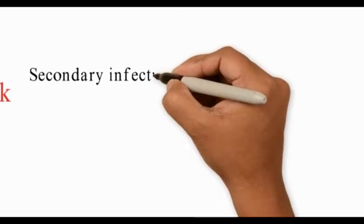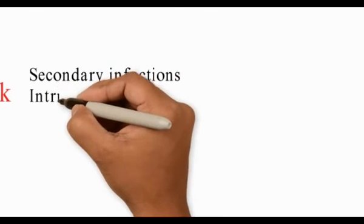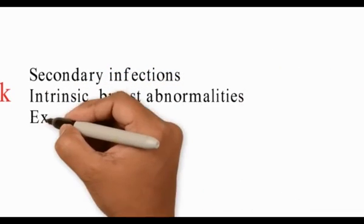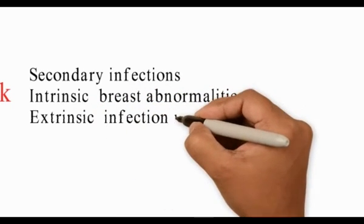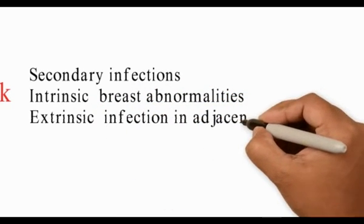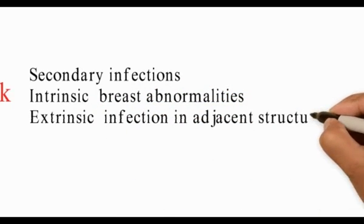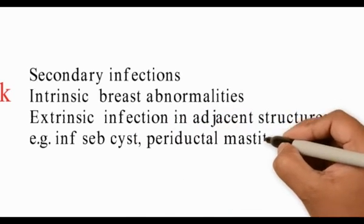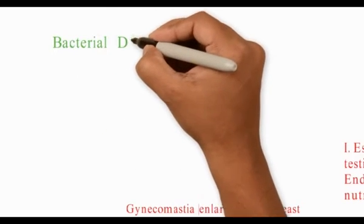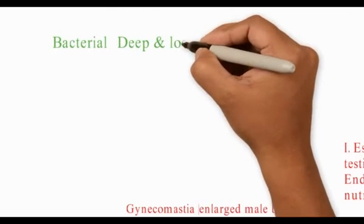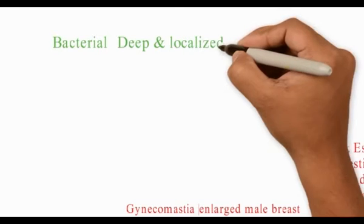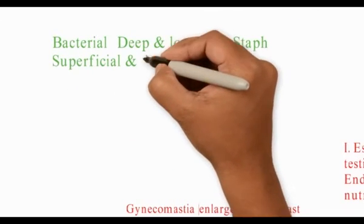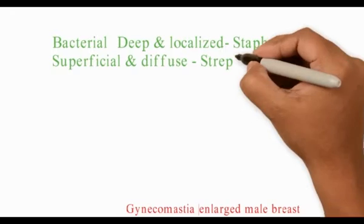Secondary infections are caused either due to an intrinsic breast abnormality such as an inverted nipple leading to crusting and an abscess, or extrinsic breast anomalies such as an infected sebaceous cyst or periductal mastitis. Staphylococcal infections are usually deep and localized, whereas streptococcal infections are superficial and diffuse.